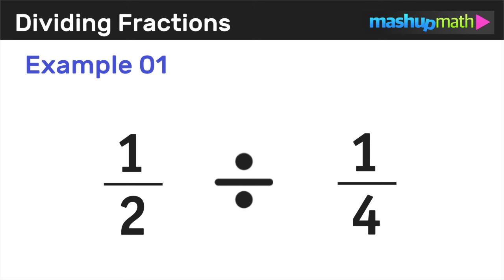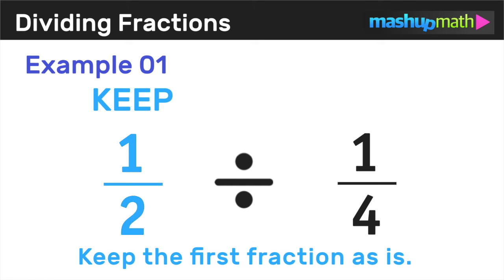So in our first example let's figure out how to divide 1 half by 1 fourth. Now the first step of our three-step method for dividing fractions is keep. And that just means to keep the first fraction as is. Just leave it alone and don't change anything.